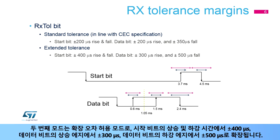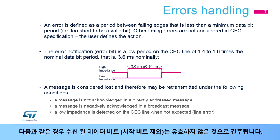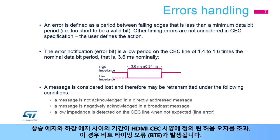The second mode is an extended tolerance mode, where the timing for the start bit is extended to plus or minus 400 microseconds for rise and fall transitions, plus or minus 300 microseconds on the rising edge of a data bit, and plus or minus 500 microseconds on the falling edge of a data bit. A received data bit, excluding the start bit, is considered invalid if the period between the rising and falling edge exceeds the tolerance margins as defined by the HDMI CEC specification.